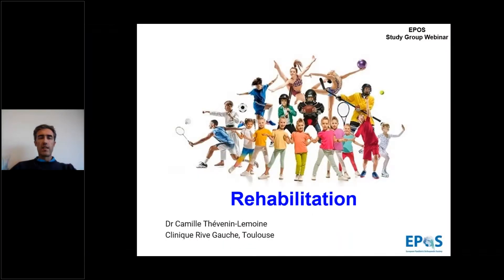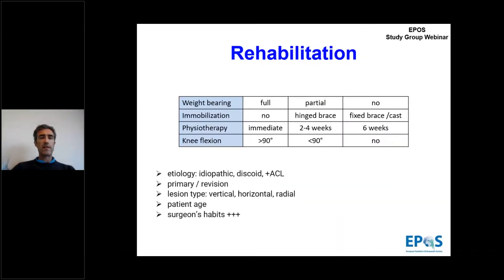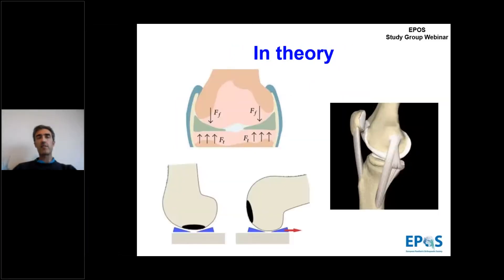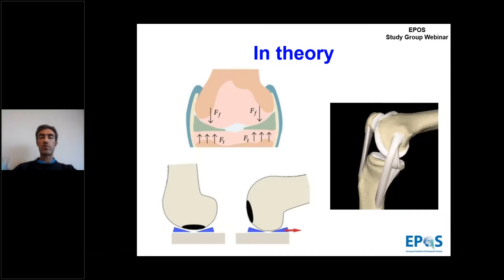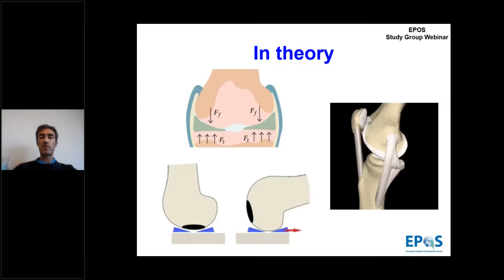Thank you, Monica. Regarding rehabilitation, there are many possible variations in post-operative management. Most authors recommend partial support, immobilization with hinge brace, rehabilitation starting at two weeks, and possible flexion up to 90 degrees, with all combinations possible. It will depend on etiology, whether primary repair or revision, type of meniscus lesion, age of the patient, and surgeon's habits. Theoretically, immobilization and protected weight-bearing protect healing tissue from damaging shear forces during pivoting and squatting. One main concern is compression of the posterior segment of the meniscus beyond 90 degrees of flexion — but are these fears justified?